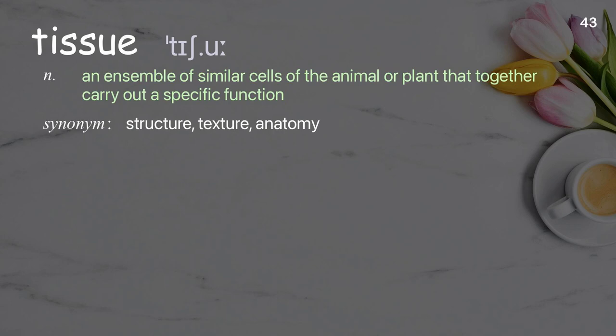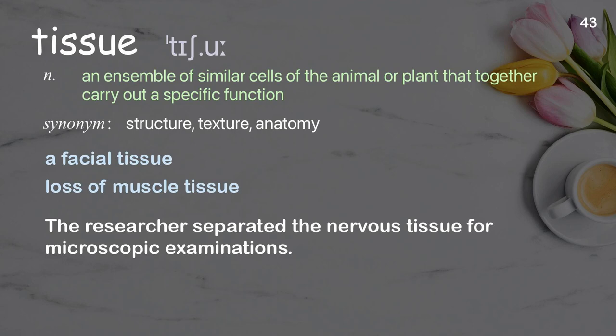Tissue: an ensemble of similar cells of the animal or plant that together carry out a specific function. Examples: a facial tissue, loss of muscle tissue. The researcher separated the nervous tissue for microscopic examinations.